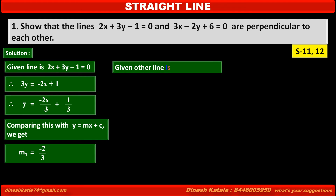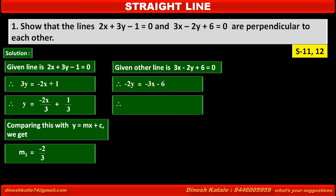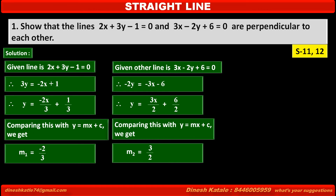The other given line is 3x minus 2y plus 6 is equal to 0. Converting this to the form y is equal to mx plus c, we get minus 2y is equal to minus 3x minus 6. Dividing both sides by minus 2, we get y is equal to 3 upon 2 times x plus 3. So slope m2 is equal to 3 upon 2.